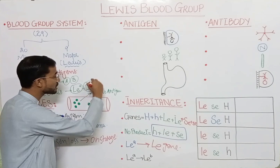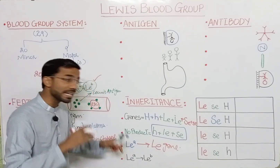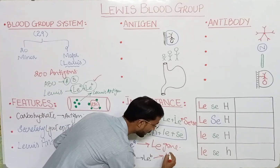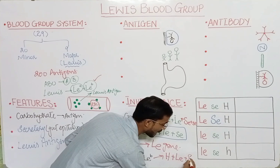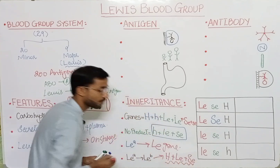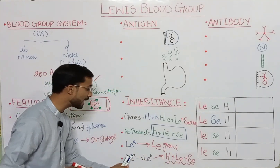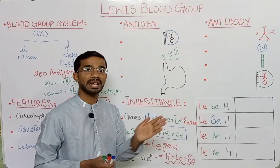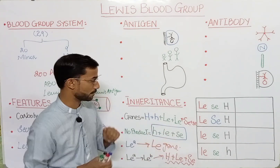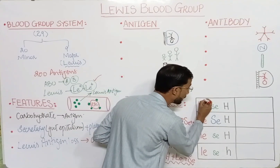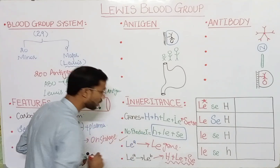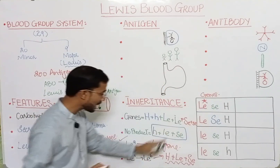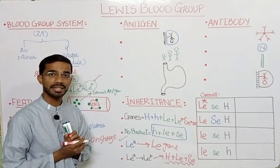The LEb antigen is formed when LEa converts into LEb. This conversion occurs when three genes are present together: capital H, capital LE, and capital Se. These three genes convert LEa into LEb. So when capital LE is present, LEa antigen will be present.